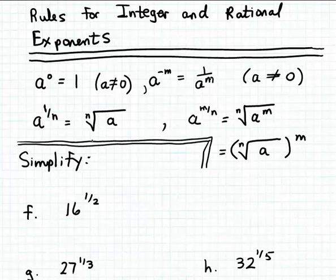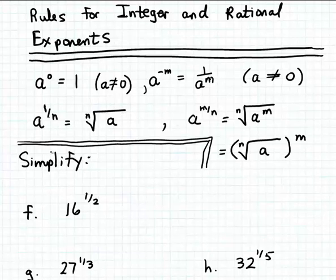The first rule we're going to apply in our examples is that if you raise a base to a fractional power where the fraction is of the form 1 over n — so the numerator of the fraction is 1 and the denominator is a positive whole number, a natural number — then that's just another way of expressing the nth root of the base a.